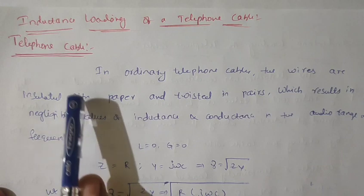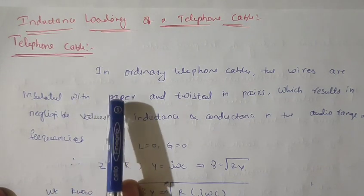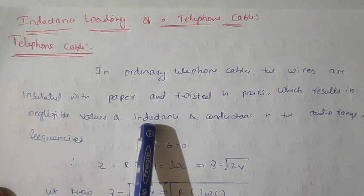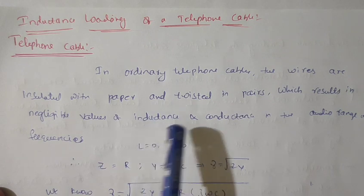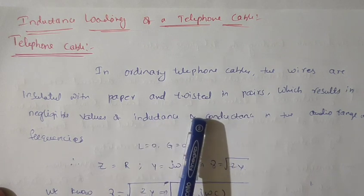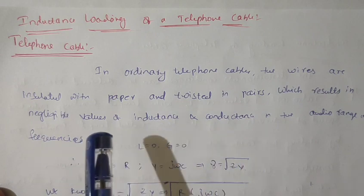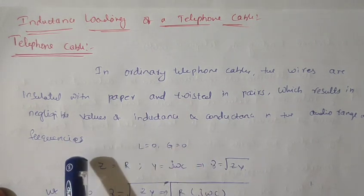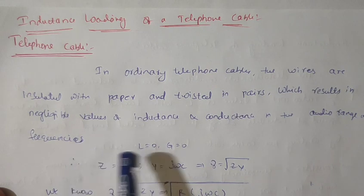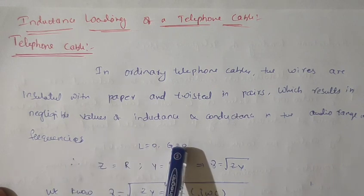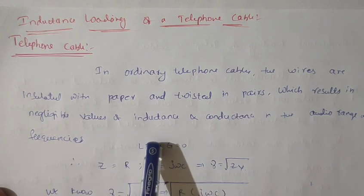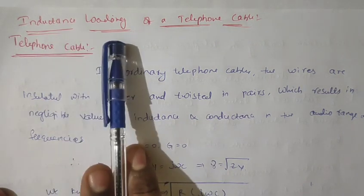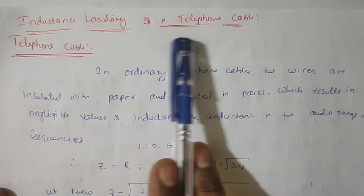In the telephone cable, we generally face attenuation constants as well as phase constants. To reduce those attenuation constants and phase constants, by increasing the frequency the attenuation constant also increases. So, to reduce that attenuation constant at higher frequencies, we are going to add some amount of inductance on the telephone cable.